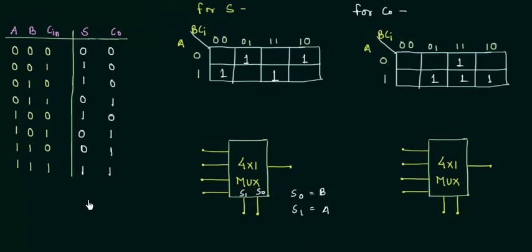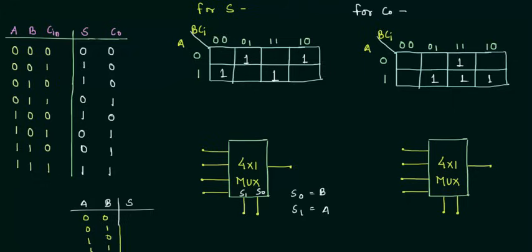Now we will make a small table for the selector variables. The columns are A, B, and the output S. The four possibilities are: A=0,B=0; A=0,B=1; A=1,B=0; A=1,B=1. When A=0 and B=0 — meaning S1=0 and S0=0 — the output equals I0. Similarly for I1, I2, and I3. I have to find the values of I0 through I3.